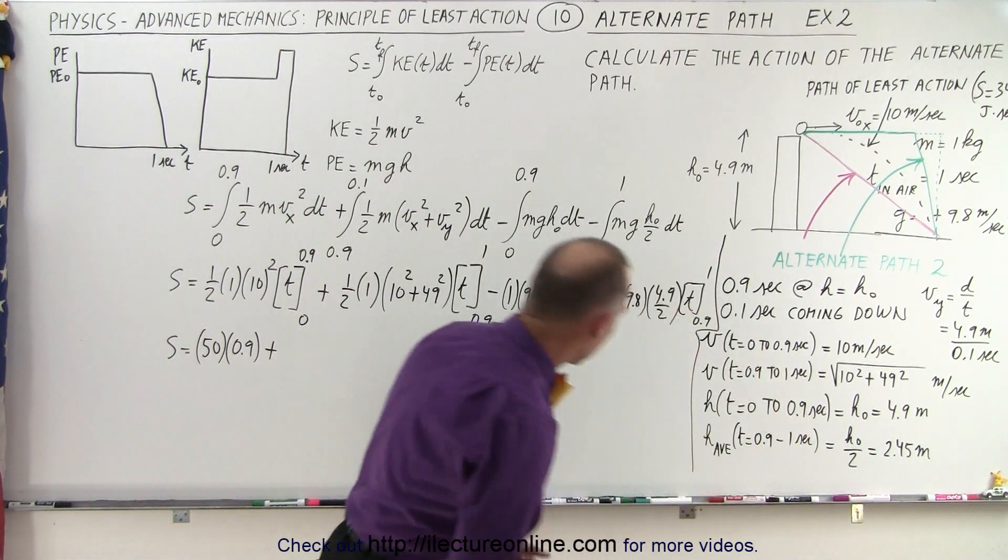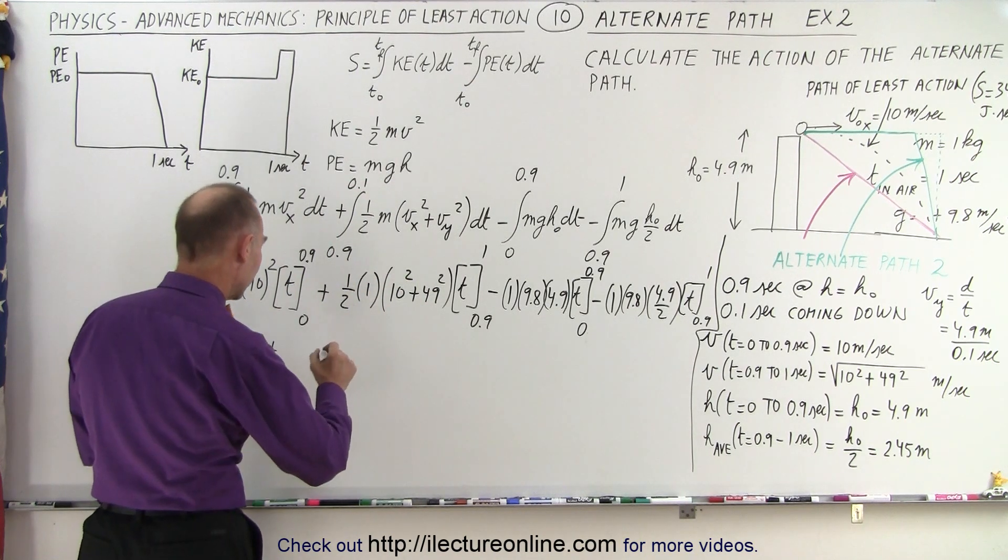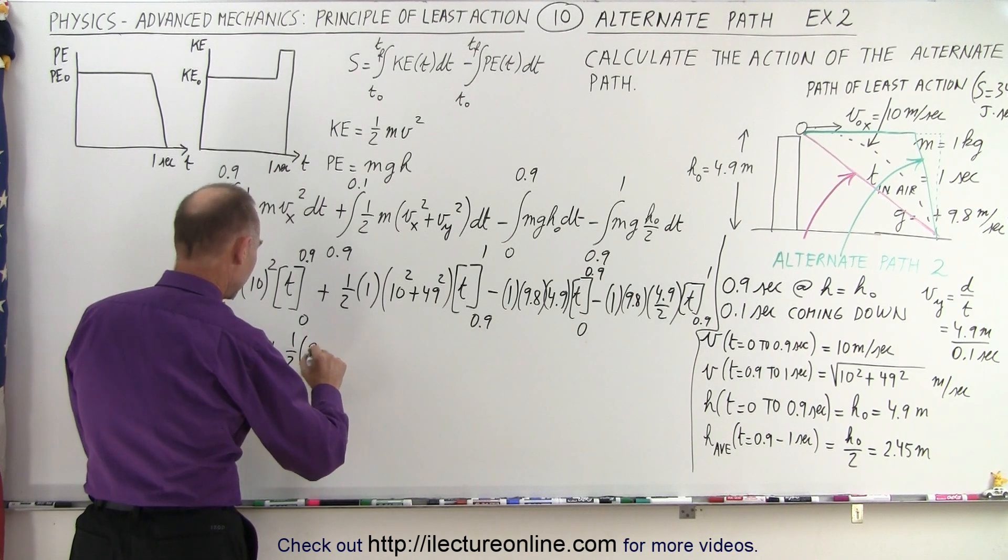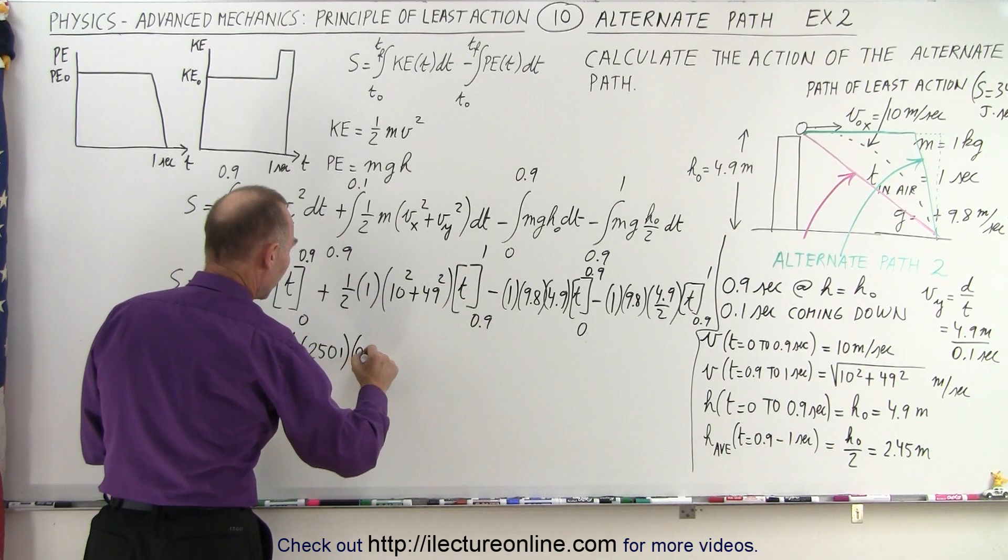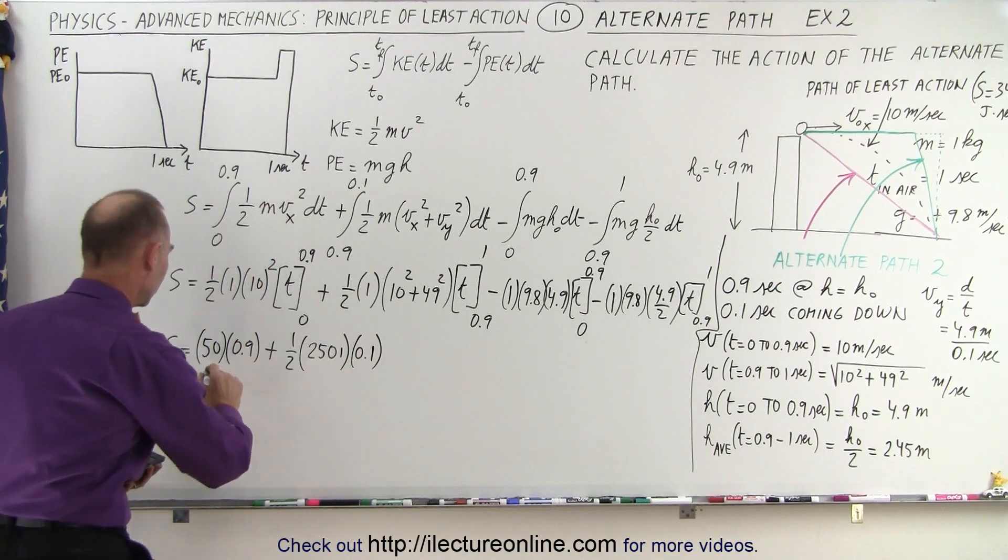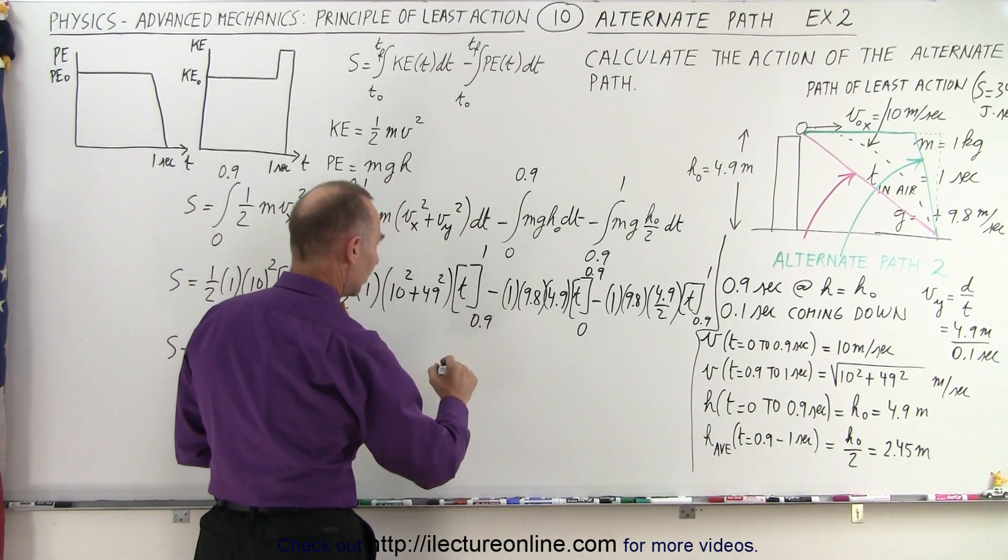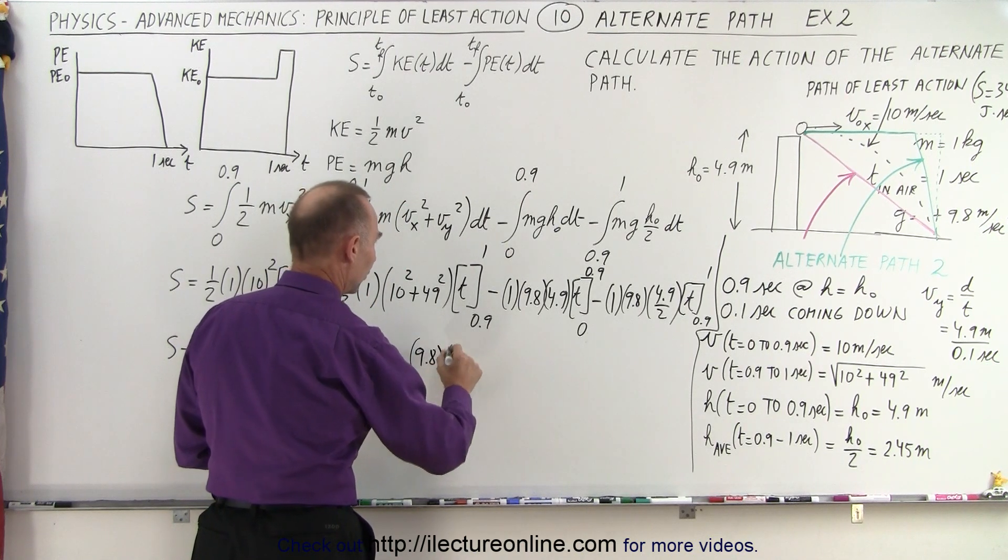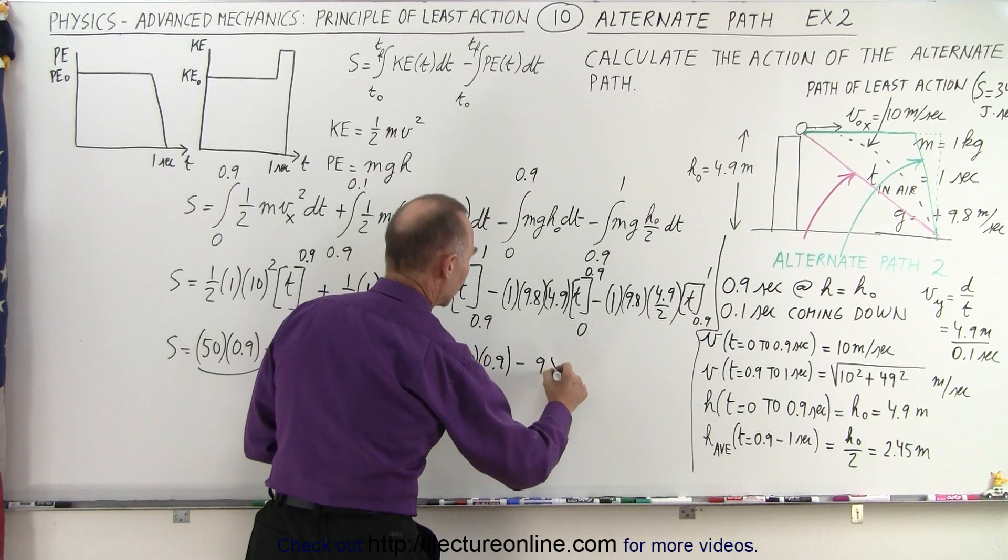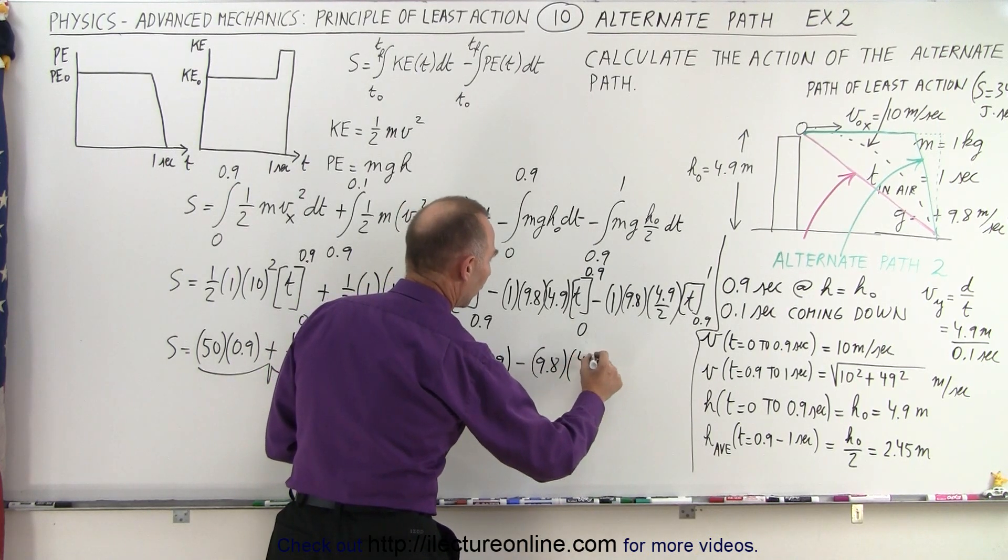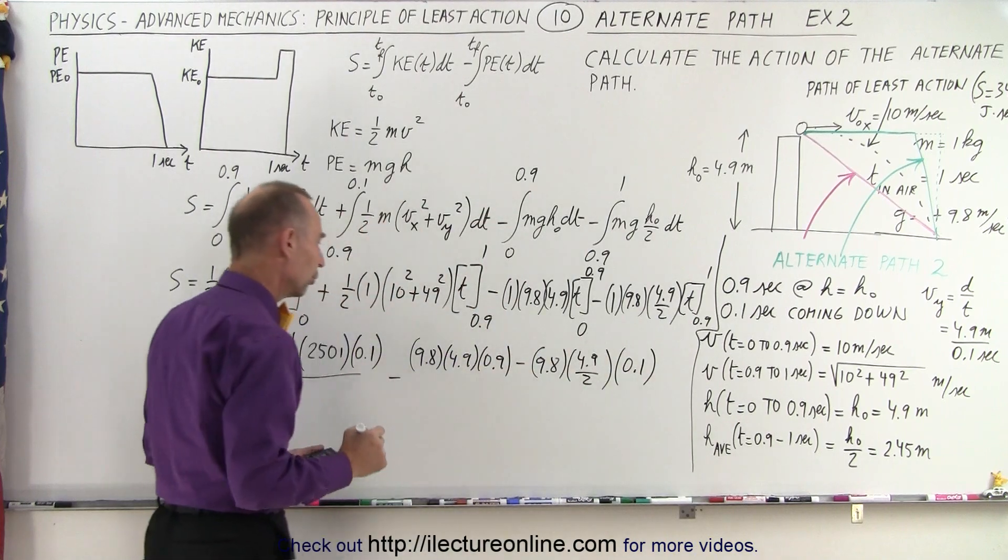I think we need a calculator for that. Right, 49 squared plus 100. Okay, let's do it like this. So that's equal to one half times 2501 multiplied times the time difference of 1 to 0.9, that would be 0.1, like this. So that's the second part of the kinetic energy term. So this here is the kinetic energy two terms. And now minus, right here we get 9.8 times 4.9 times 0.9, and then minus 9.8 times 4.9 divided by 2, and times 0.1 because that's a much shorter duration. Okay.